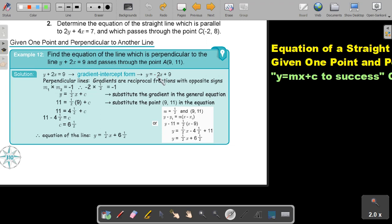This is going to be negative 2. But, don't forget that perpendicular lines, the gradients are reciprocal fractions with opposite signs. So, I have to find the reciprocal fraction of 2, which is a half, and opposite signs will be then positive a half. So that if I multiply this 2, it will give me negative 1.